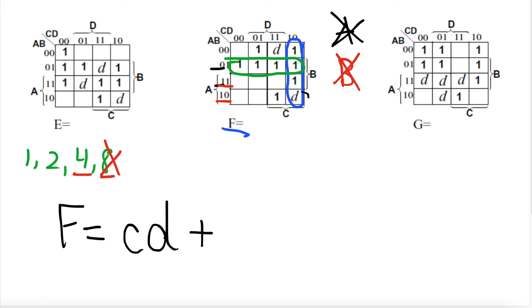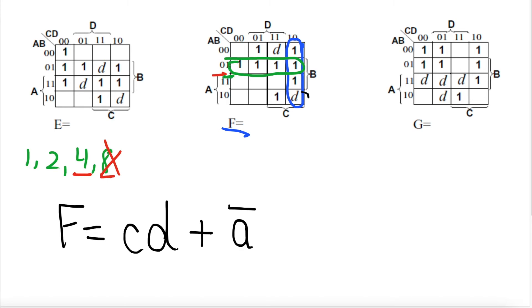Now what about our green circle? For the green circle, we see that A is 0 for this entire row, so Ā is consistent throughout. We can write down Ā. We also know that B is 1 and consistent throughout this whole row. So we can write down ĀB, since both Ā and B are consistent for the horizontal row.